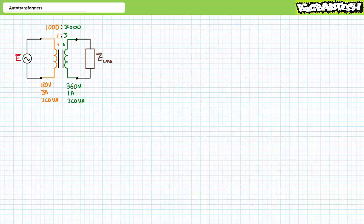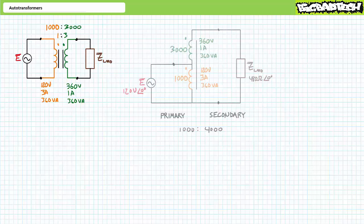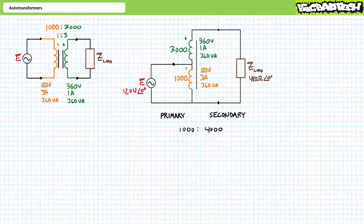As an example, consider a traditional one-to-three step-up transformer with a 120 volt three amp rated primary and a 360 volt one amp rated secondary for a total power rating of 360 volt amperes, with 1000 turns in the primary and 3000 turns in the secondary. Now consider these same windings configured as a step-up auto transformer with 1000 turns in the primary and 3000 plus 1000 or 4000 turns in the secondary. The 1000 to 4000 turns ratio makes this a one-to-four step-up auto transformer, stepping 120 volt input up to 480 volts.